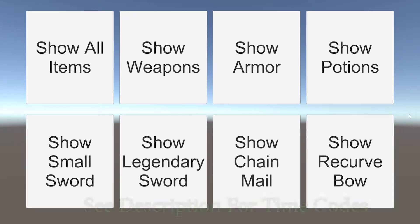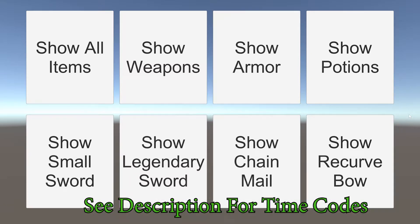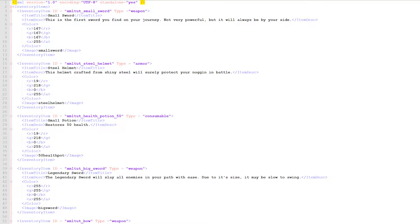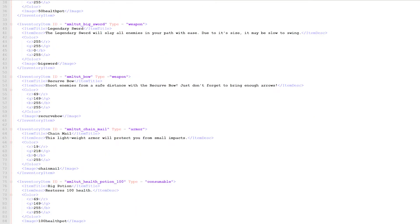Before we get into the actual tutorial, I'm going to give you a quick demonstration of the Unity project I've created. Let's say we've created a game where we have an inventory of weapons, armor, potions, and all these different items have different data attributes associated with them — such as a name, a description, an image, and different stat points like attack damage or healing amount. We can save all this data in an XML file like this one.